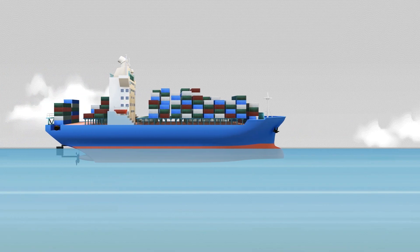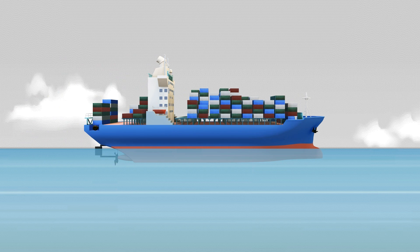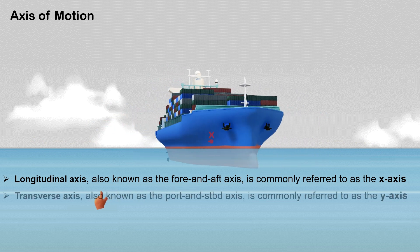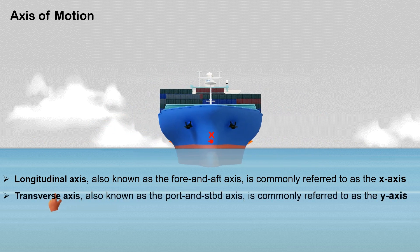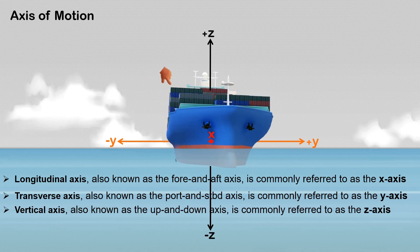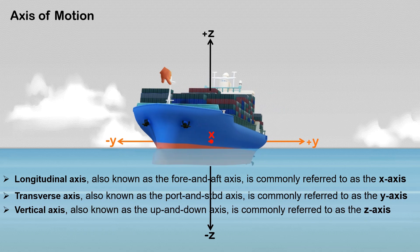The six motions of a ship occur primarily along three axes of motion. The longitudinal axis, also known as the fore and aft axis, is commonly referred to as the x-axis. The transverse axis, also known as the port and starboard axis, is commonly referred to as the y-axis. Lastly, the vertical axis, also known as the up and down axis, is commonly referred to as the z-axis. All six motions of the vessel take place along or around these three axes.